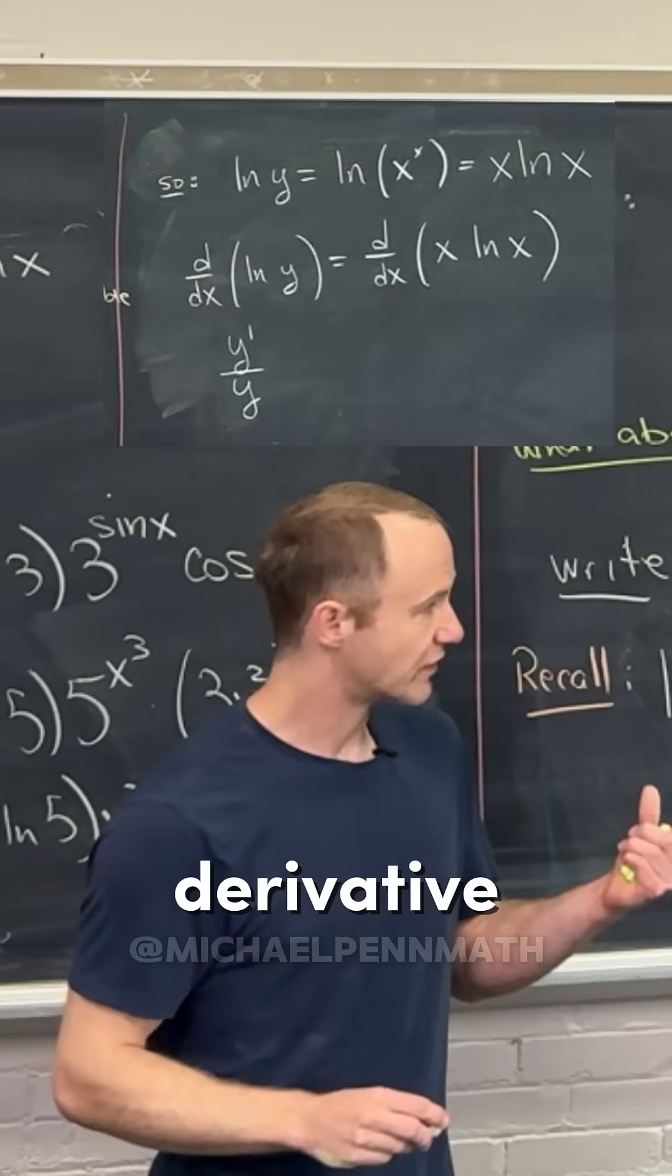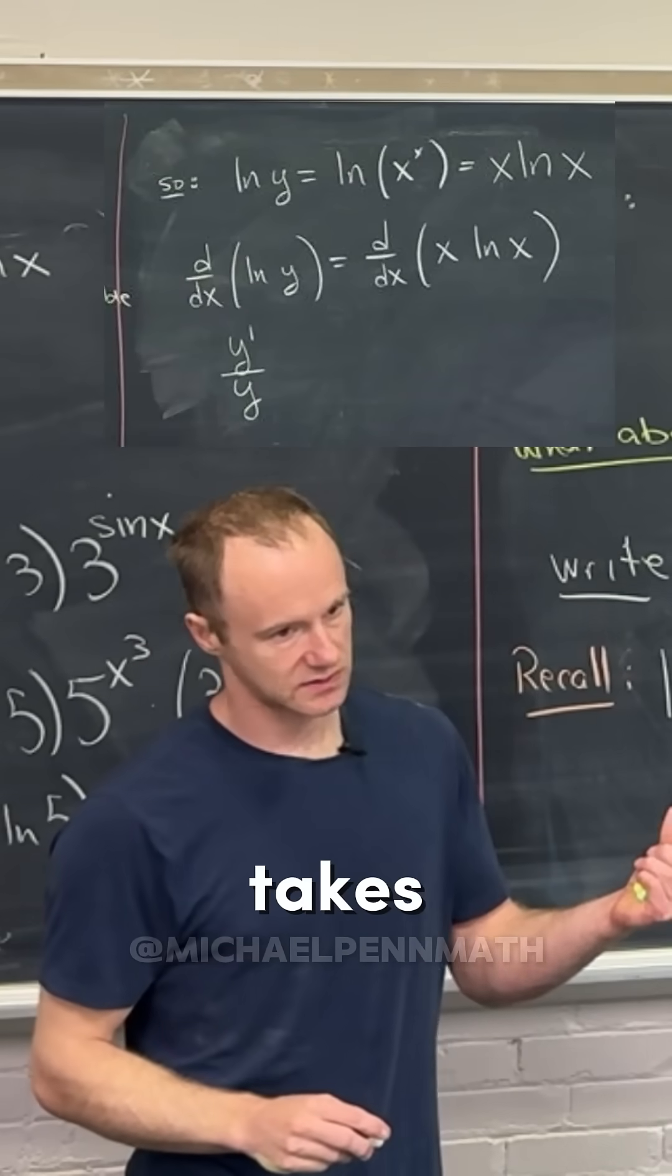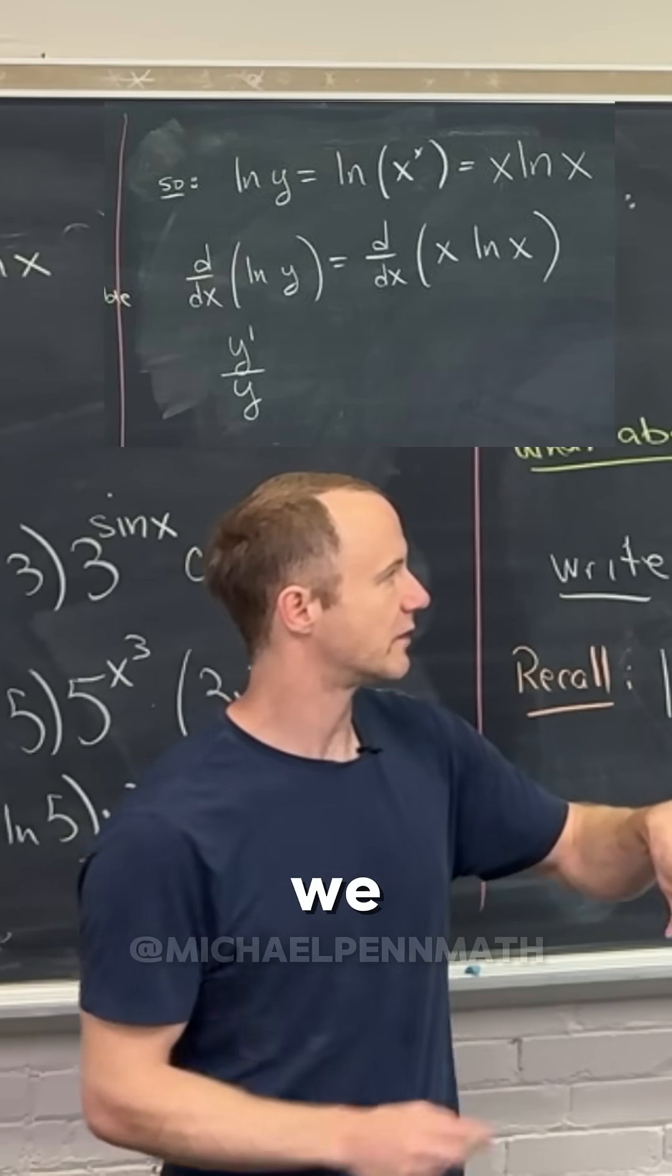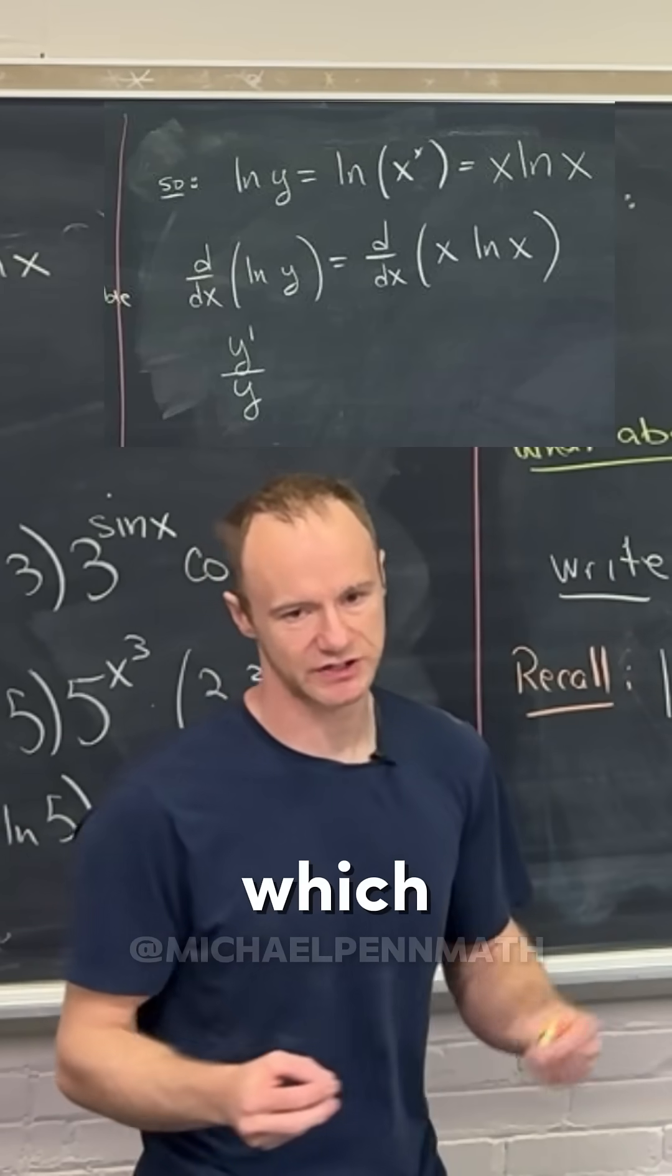So why is that? Because the derivative of the log takes the reciprocal of whatever's inside, one over y, but then by the chain rule, we have to multiply by the derivative of y, which is y'.